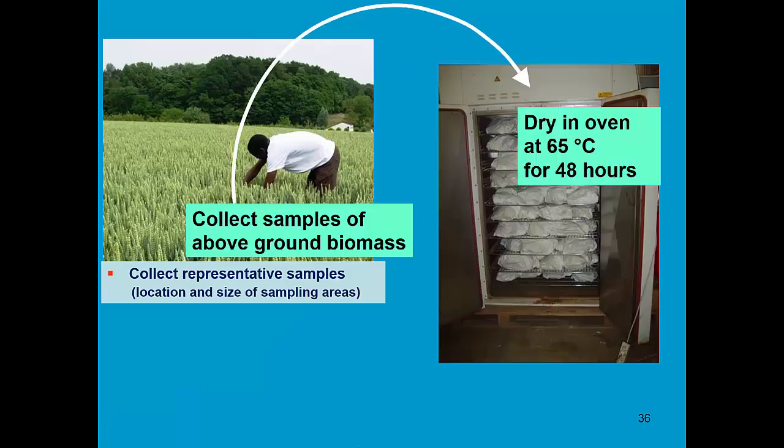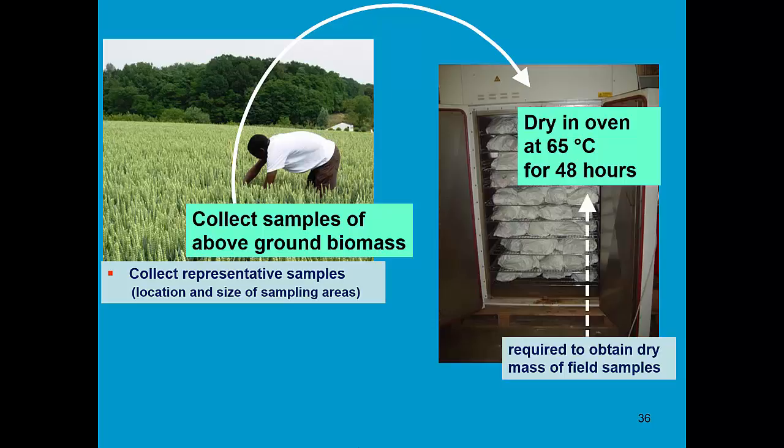The collected samples are put in a well-ventilated oven at 65 degrees for 48 hours. As such, we obtain the dry mass of the field samples.